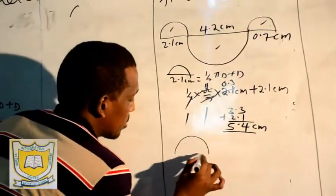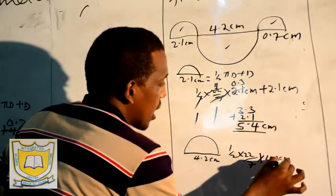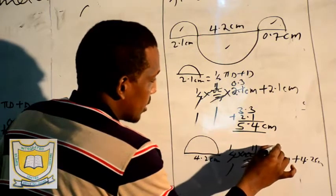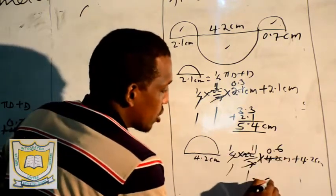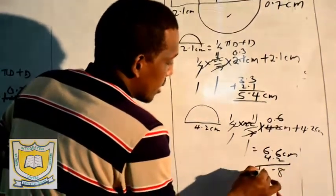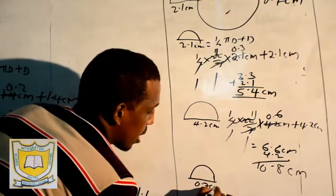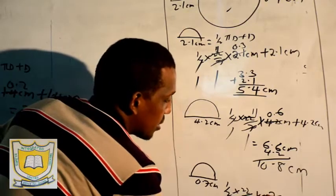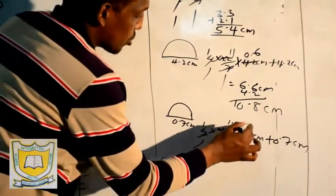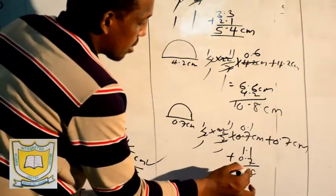Remaining is the bigger semicircle: 4.2 cm. Half times 22 over 7 times 4.2 plus 4.2. Dividing gives 0.6, then 11 times 0.6 equals 6.6 plus 4.2 gives 10.8 cm. Now the smaller one: 0.7 cm. Half times 22 over 7 times 0.7 plus 0.7. Dividing gives 0.1, then 11 times 0.1 equals 1.1 plus 0.7 gives 1.8 cm.